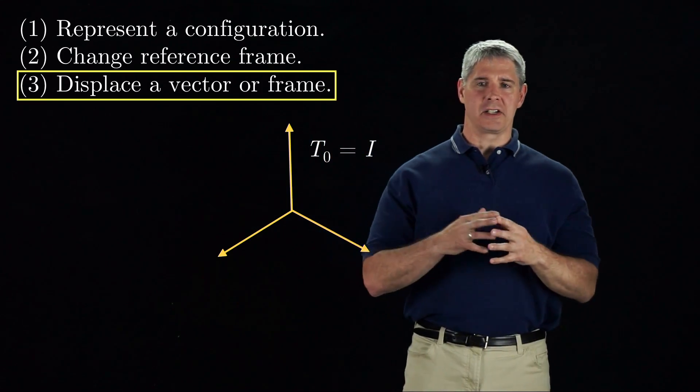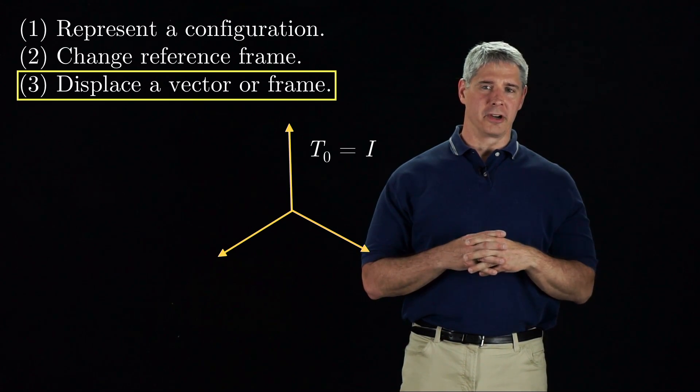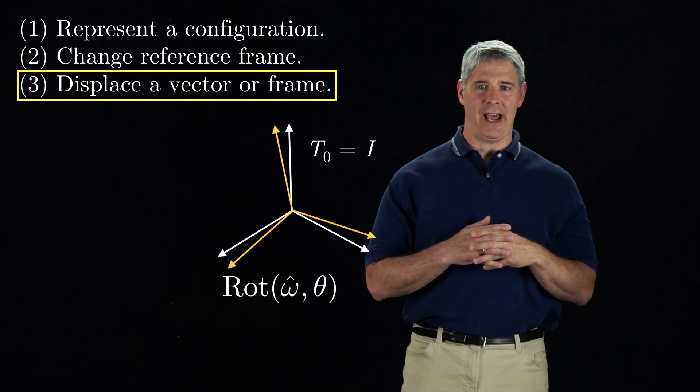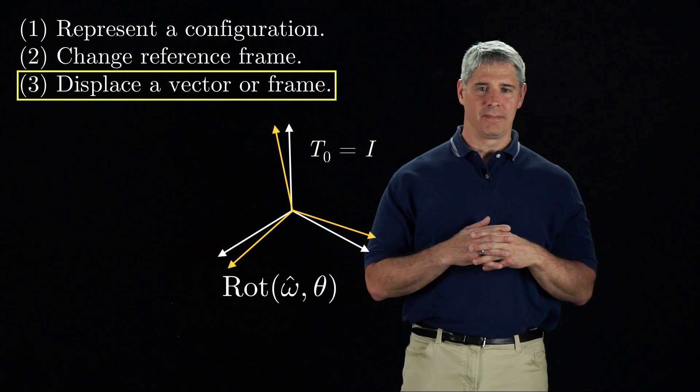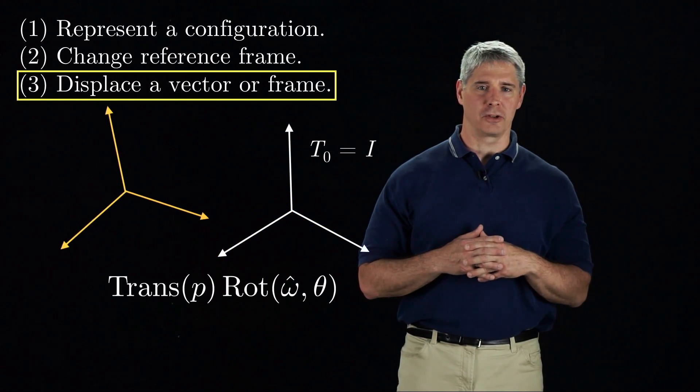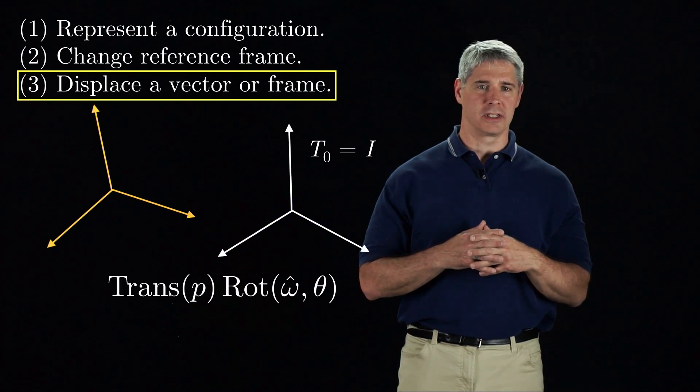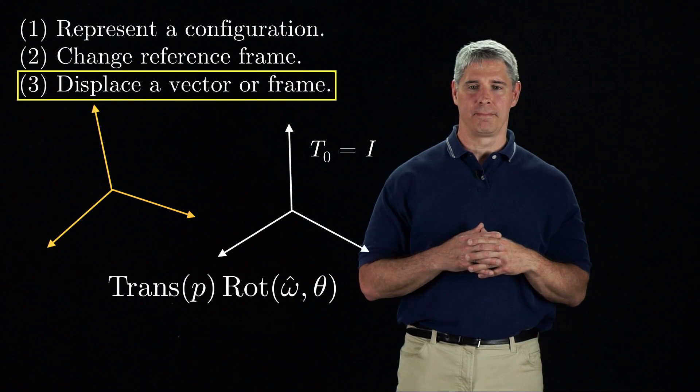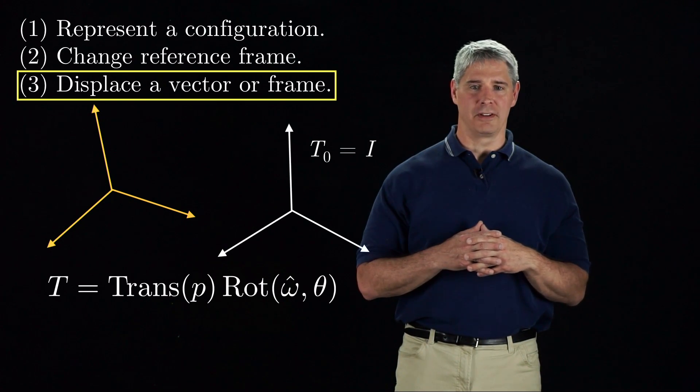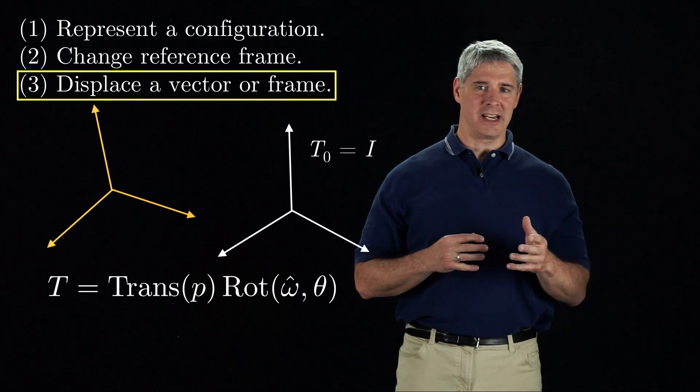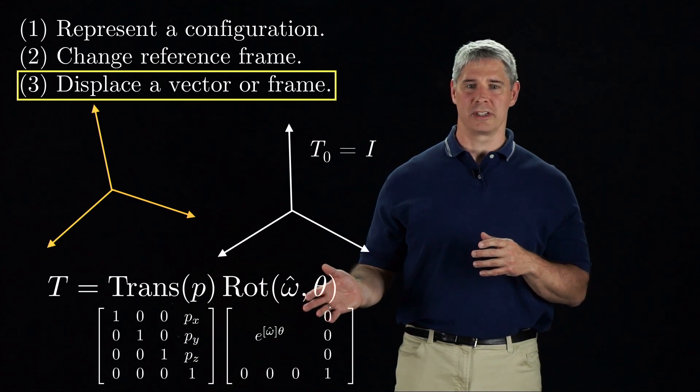In this animation, a frame initially at the zero orientation rotates about a fixed-axis omega-hat a distance theta. It then translates according to the vector P, which is expressed in the coordinates of the initial frame. Its final configuration is given by T.